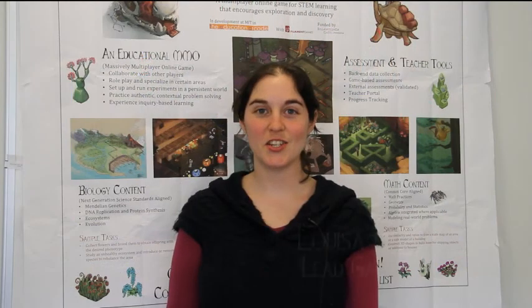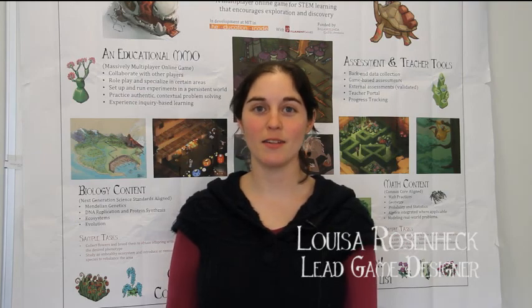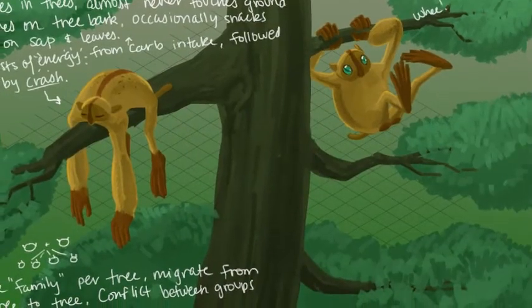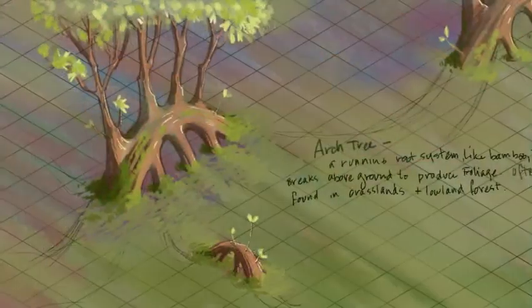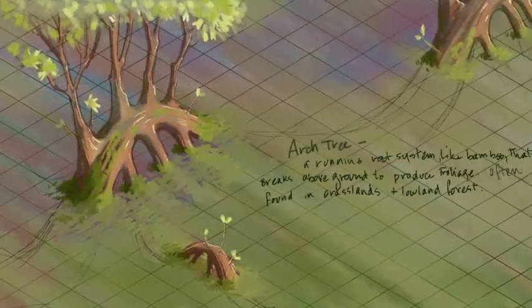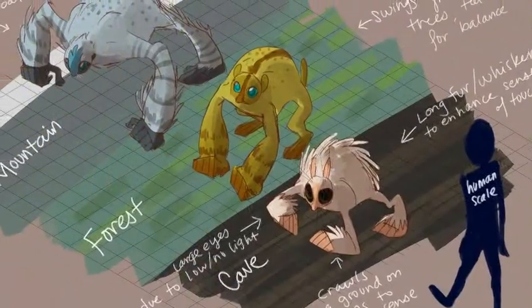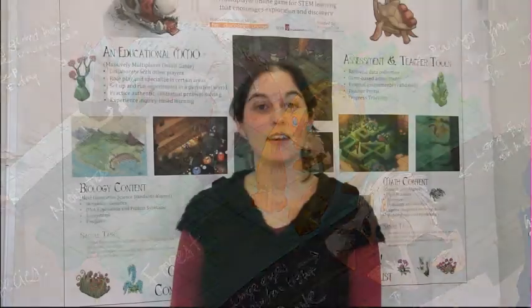In this iteration of Radix, we're covering high school math and biology topics. In biology, we're covering ecology, evolution, genetics, and human body systems. In math, we're covering algebra, geometry, and probability and statistics.